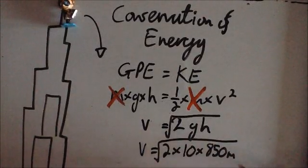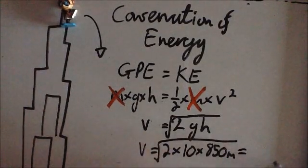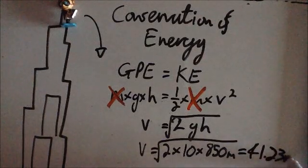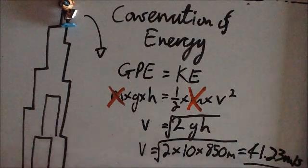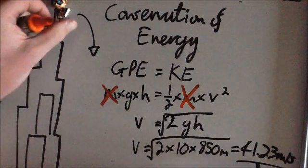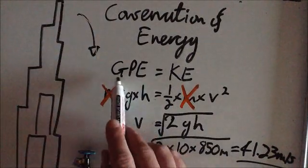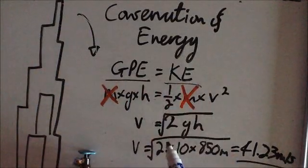This answer here will give us approximately, well, it will give us 17,000. The velocity will end up being 41.23 metres per second. So, if he jumps and falls 850 metres, he will fall and land with 41.23 metres per second as he converts all of his gravitational potential energy into kinetic energy. Poor fella.